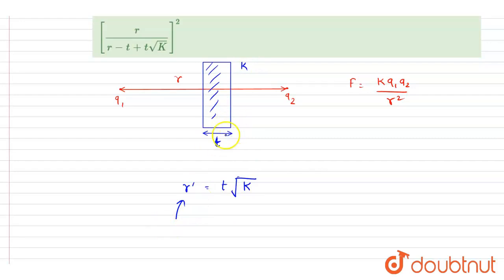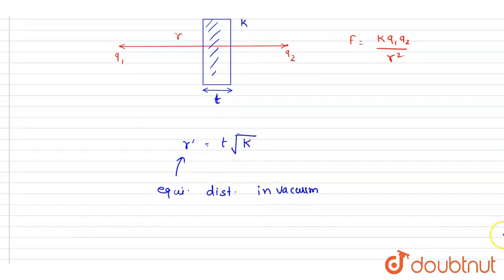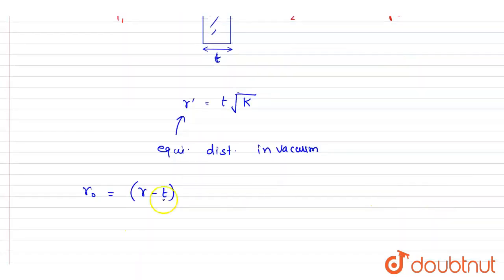The t distance in this dielectric slab will be r dash times the distance covered in vacuum. So this will be the equivalent distance in vacuum. So if I write down now the distance between them as r naught, it will be equals to r minus t. This is occupied by vacuum.